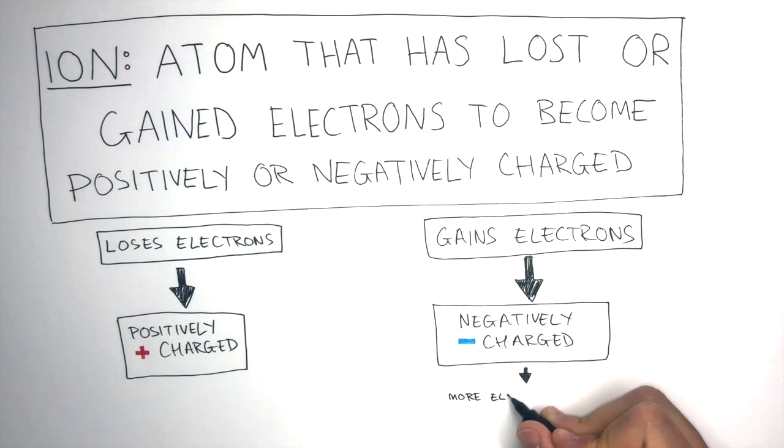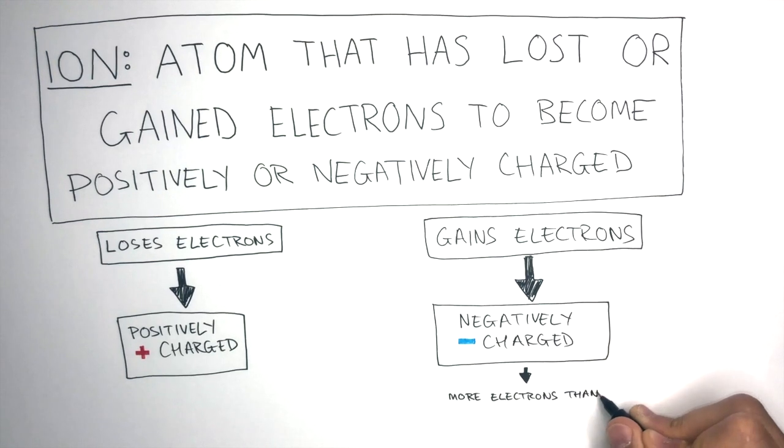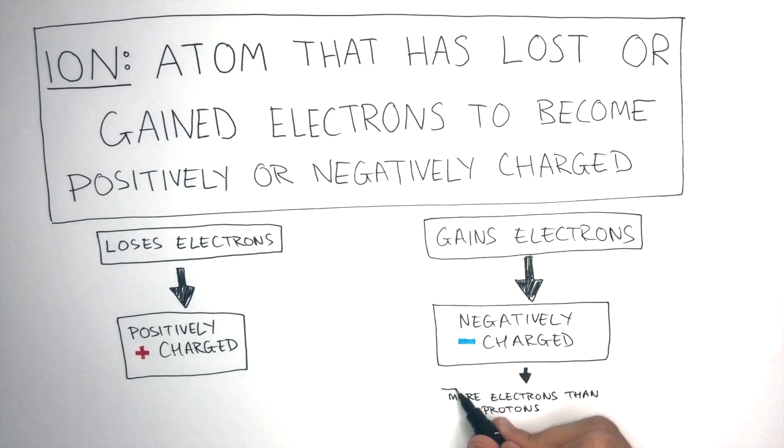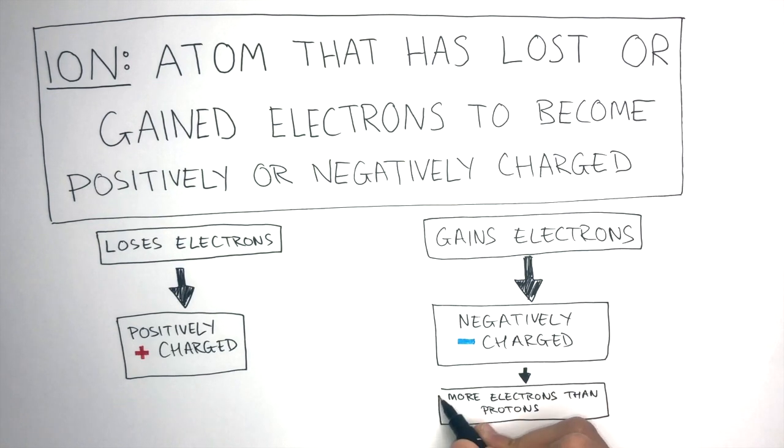A negatively charged ion will have more electrons than protons. And we call these anions. An anion is a negatively charged ion.